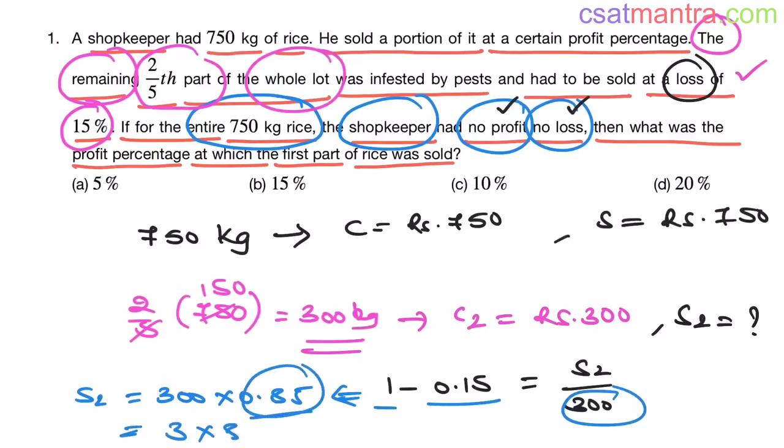Now, this is 3 into 85. 3 eights are 24, 240, 3 fives are 15. So, 255. 240 plus 15, 255. So, the S2 value is 255 rupees, my friends.